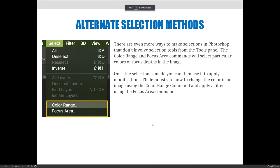Now that we've talked about making selections and modifying selections, let's talk about ways to make selections that don't use selection tools. A lot of times when you say you know how to make selections, you think of using the magic wand tool, the quick selection tool, or the polygonal lasso tool. But there are other ways to select colors inside Photoshop. I'm going to introduce two additional ways: the Color Range command and the Focus Area command.